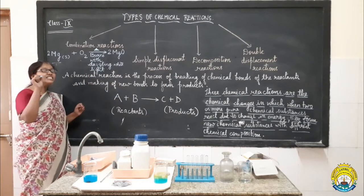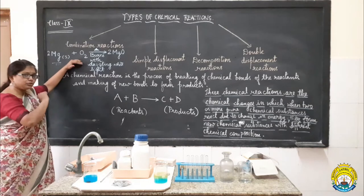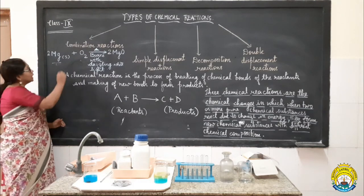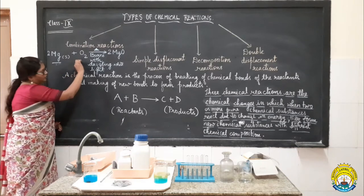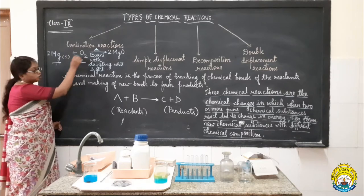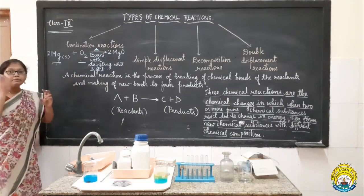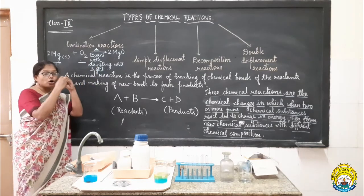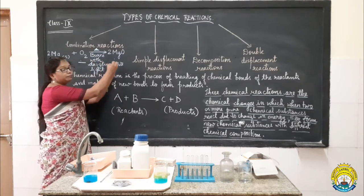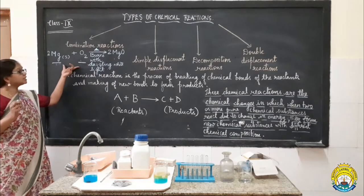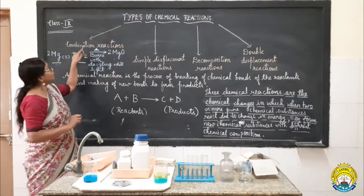The activity which we have seen a few moments before was showing the combination type of reaction. Here, magnesium metal which is an element got combined with another element oxygen. They formed new bonds between themselves and formed a new compound, magnesium oxide. So you can observe that magnesium atom is getting combined with oxygen atom to form a new bond between the two atoms to form this compound. Two simple substances are getting reacted to produce a complex compound substance.